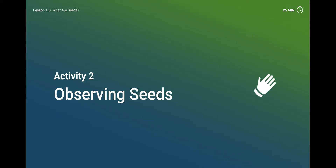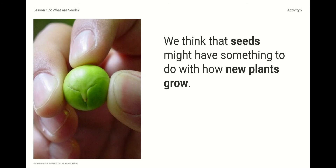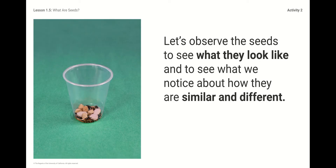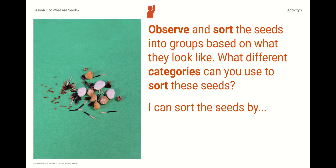Your second activity is observing seeds — you're going to help me organize them. We think seeds might have something to do with how new plants grow; there's a picture of a person holding a seed. We think trees have something to do with this too. So let's observe the seeds to see what they look like and notice how they are similar and how they are different. Here's a cup of seeds — I dump them out and you're going to help me observe and sort the seeds into groups based on what they look like. What different categories can you use to sort the seeds? You're going to stop and jot down what category to put these seeds into.